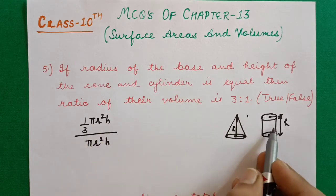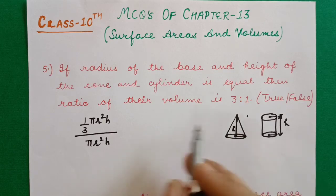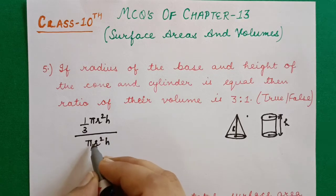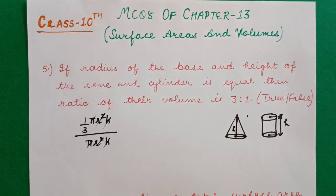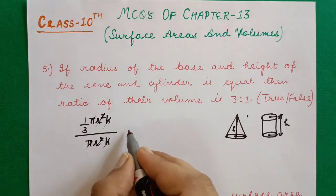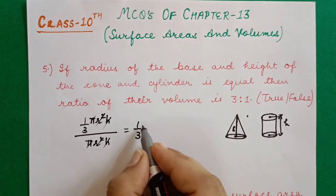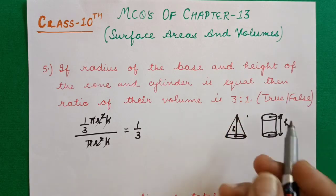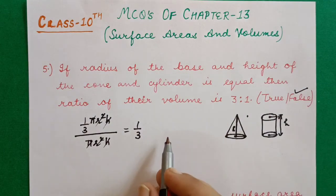The ratio of volume of cone to volume of cylinder is 1:3, not 3:1 as stated. Therefore this is a false statement. It was a simple question — just apply the volume formulas for both and compare.